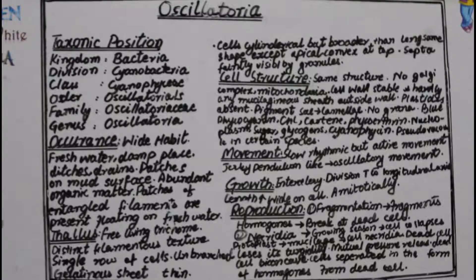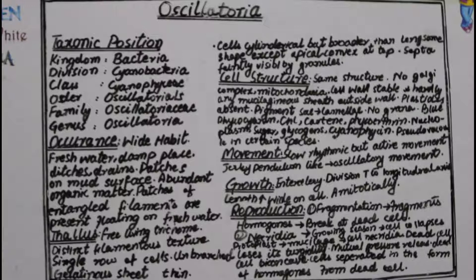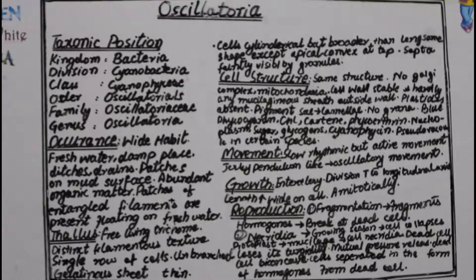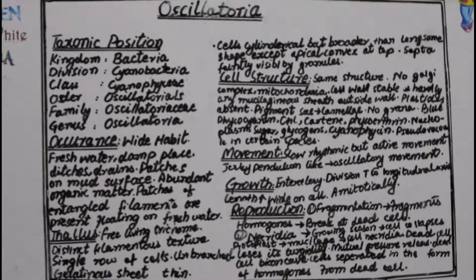Oscillatoria can be present in patches on mud surfaces where moisture is present. It is also abundant on organic matter — where there is a large amount of organic matter being decomposed, you will see patches of Oscillatoria or entangled filaments covering that surface. You will also see their filaments entangled and floating on the surface of freshwater.